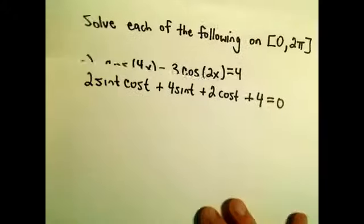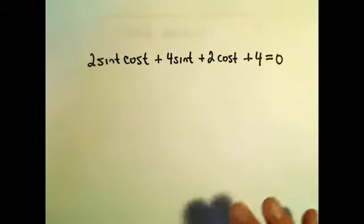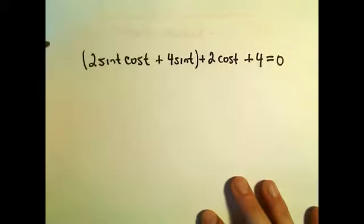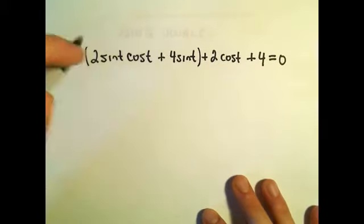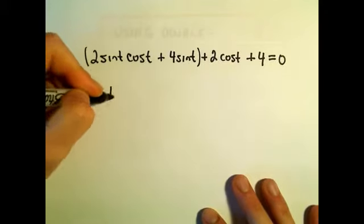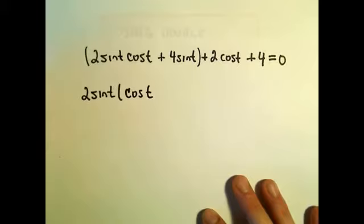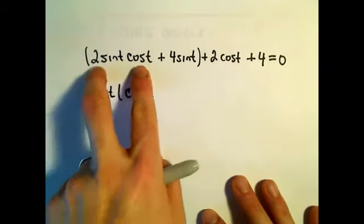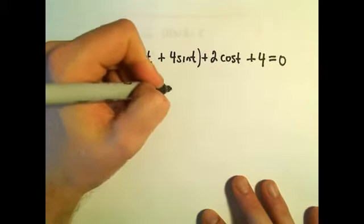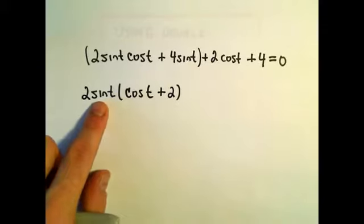And now what we have, we've got four terms kind of hanging out on the left side. So I'm going to do a little factoring by grouping here. And so I'm going to group the first two terms together. Notice we could factor a 2 out and we could also factor a sine t out. And I believe that would leave me with a cosine. So 2 sine t times cosine t will give us our first term. 2 sine t, if we multiply that by a positive 2, we'll get our positive 4 sine t.